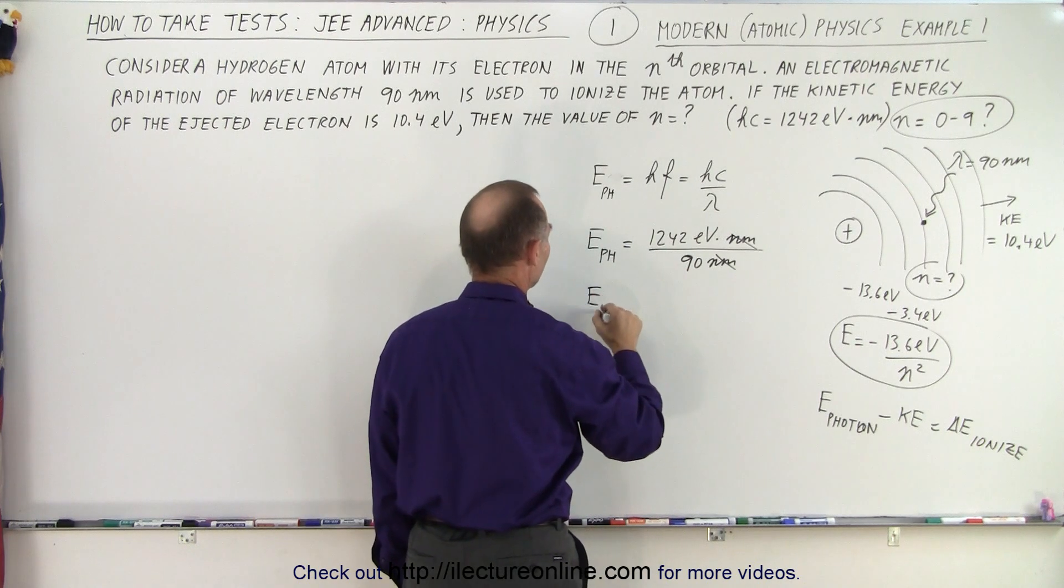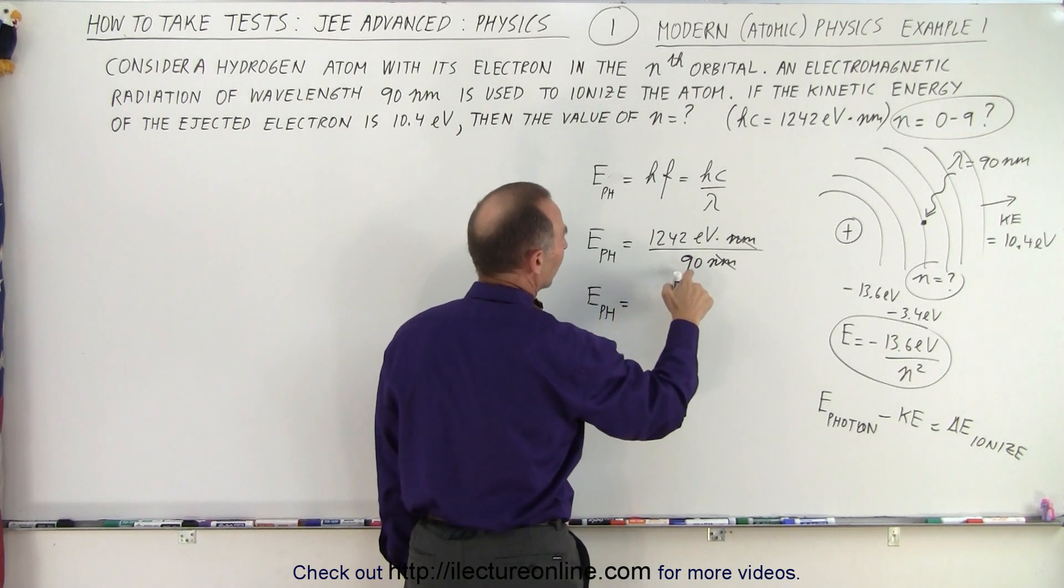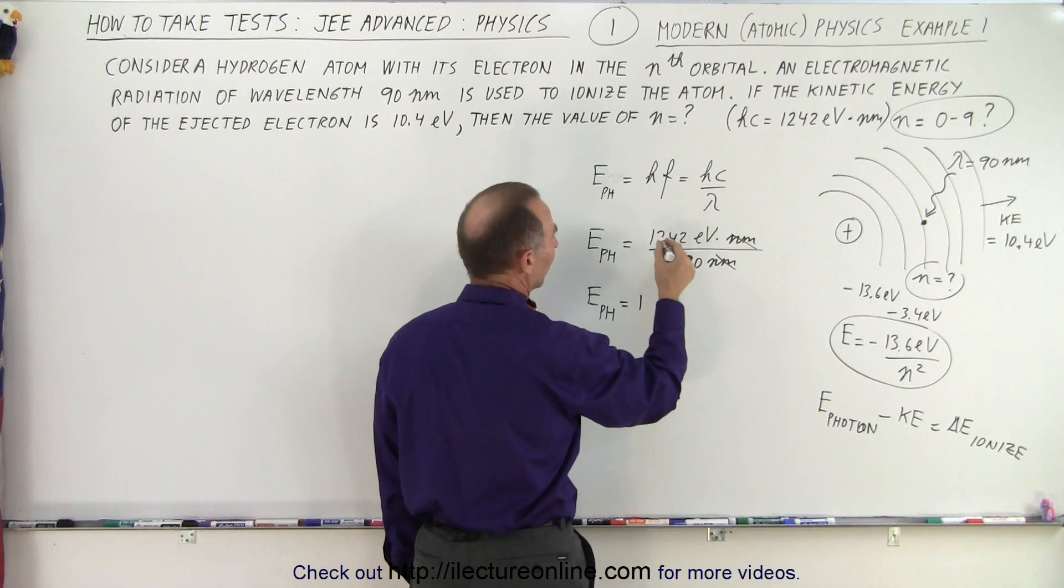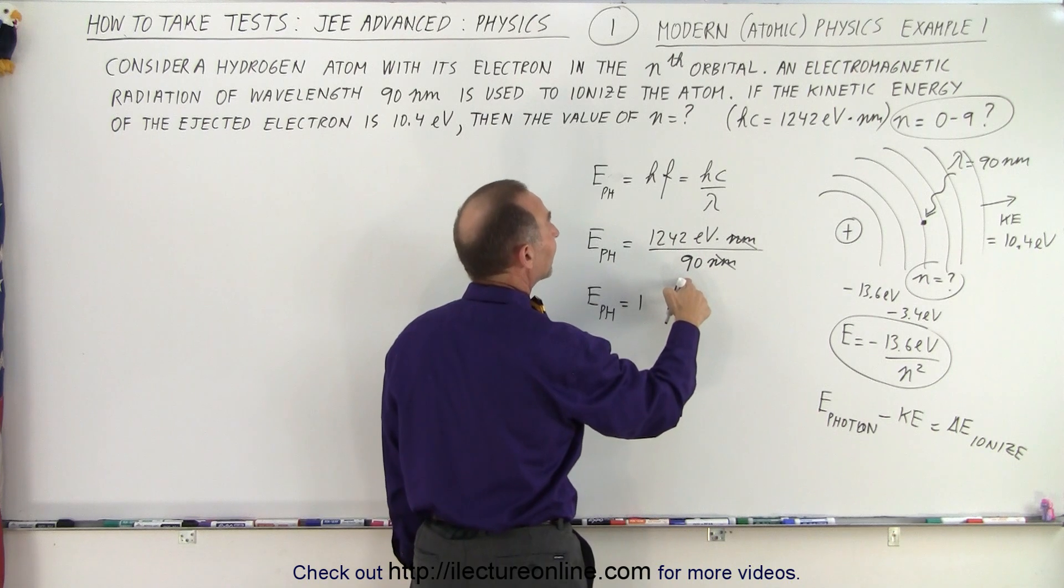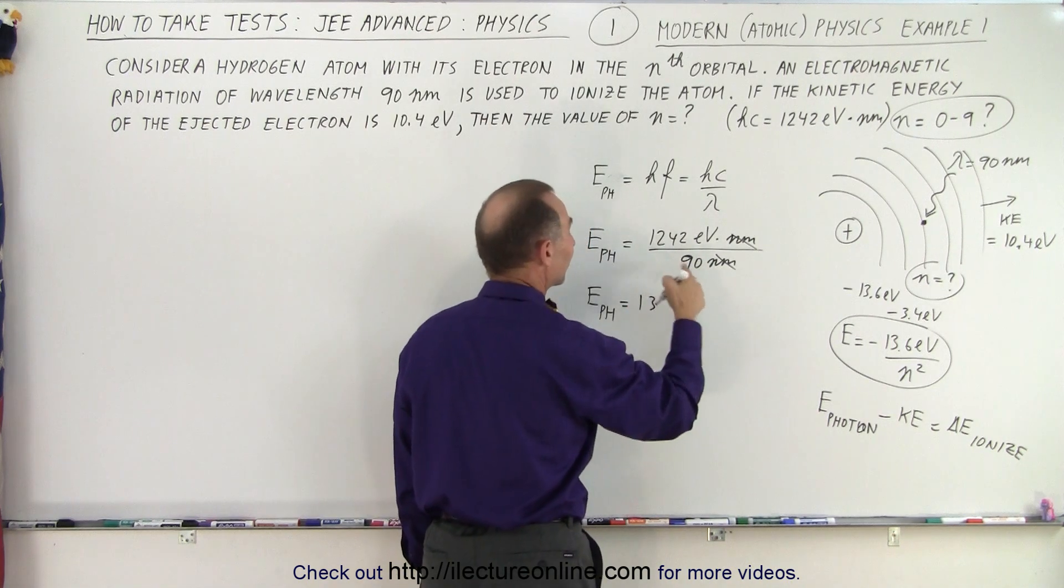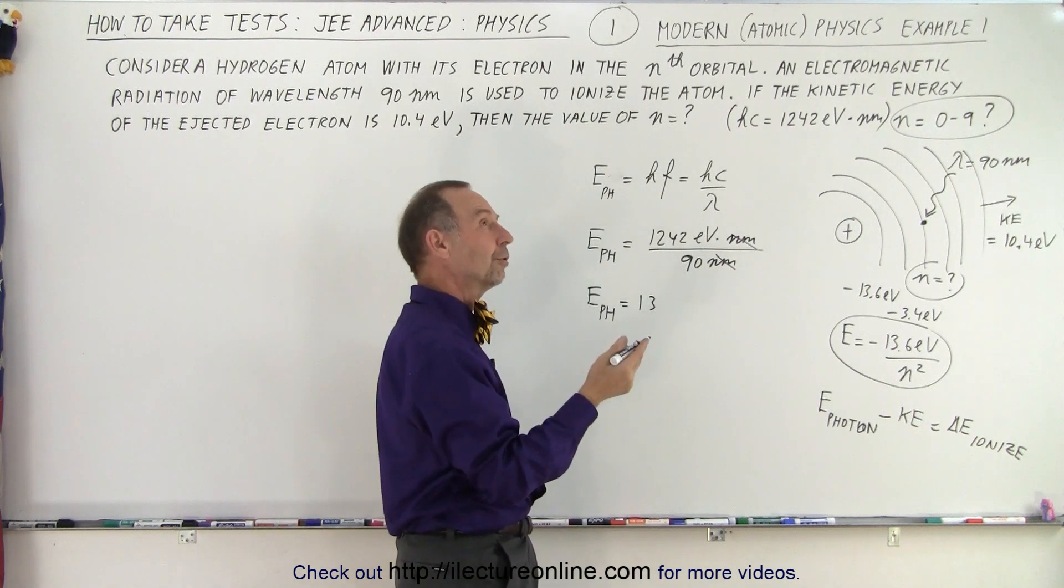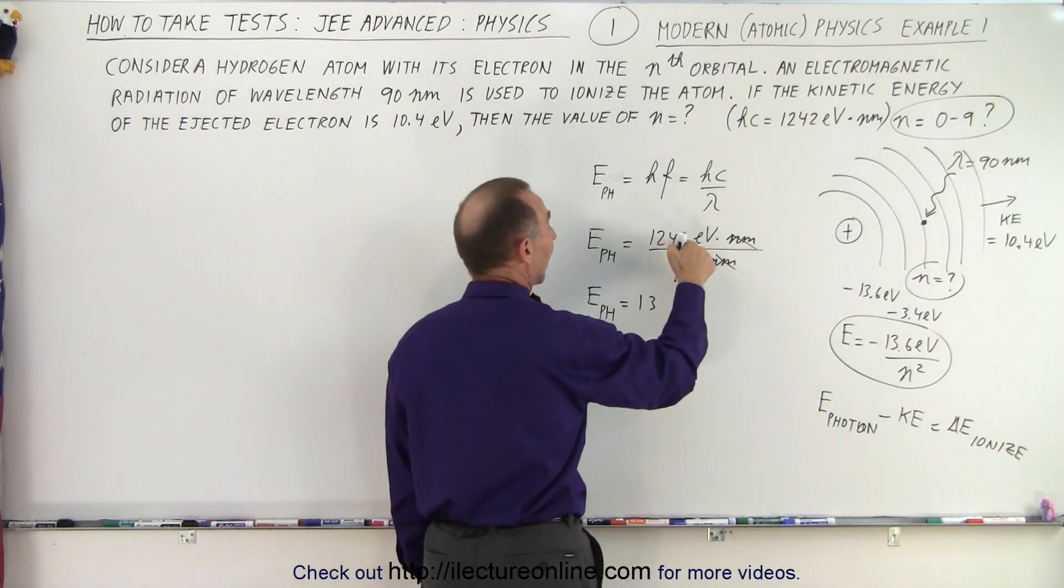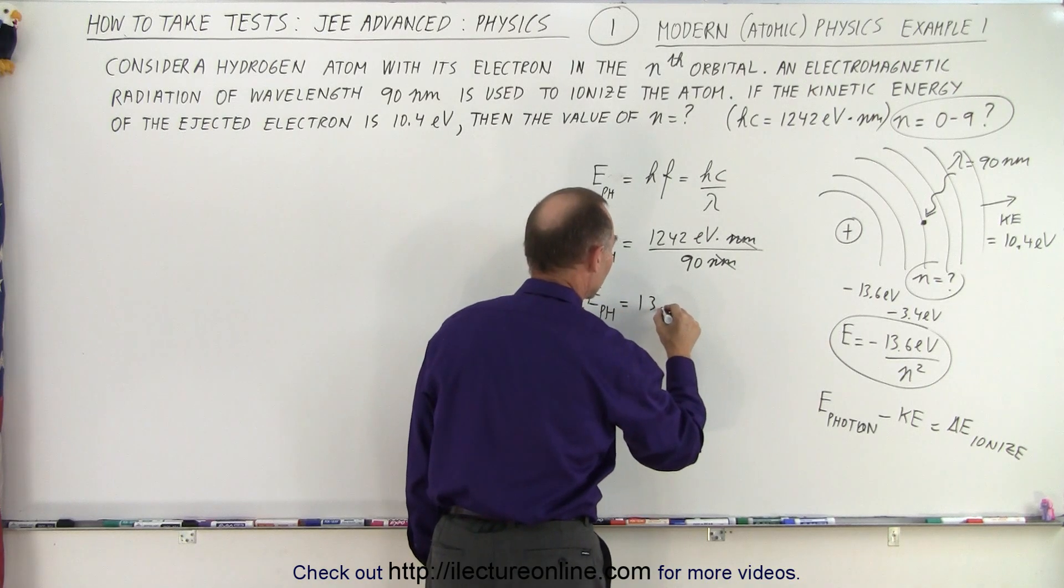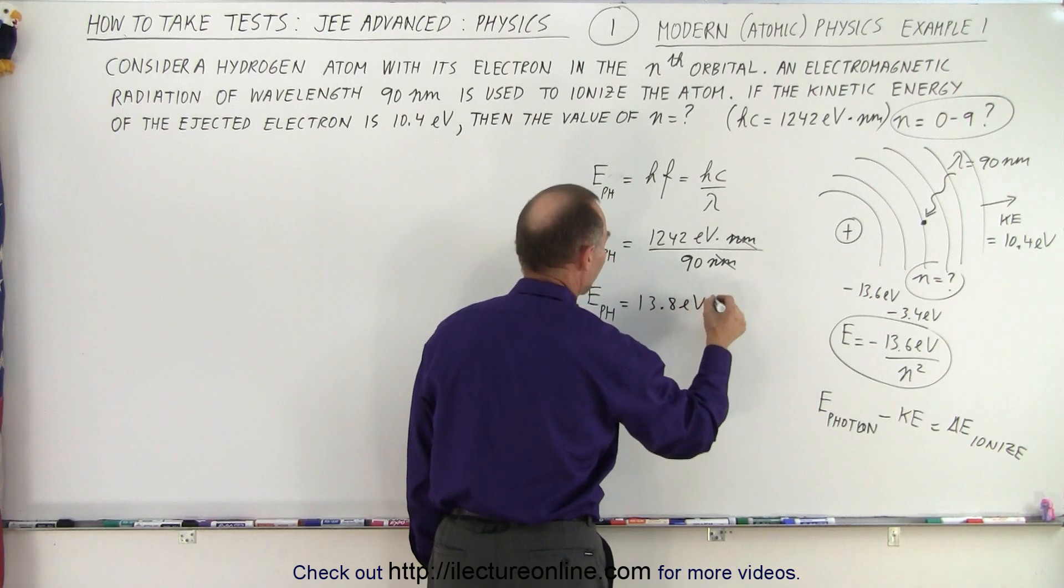Now we have to divide this number by 90. So energy of the photon is equal to, so I go 9 goes into 12 one time. That leaves me 3. 34 divided by 9, that would be 3 times, because 3 times 9 is 27. 34 minus 27 is 7. Add another 2. 72 divided by 9, that is 8. So 13.8 electron volts.